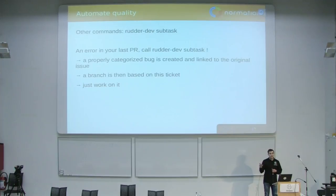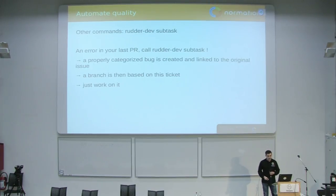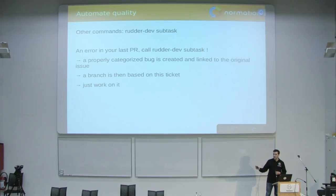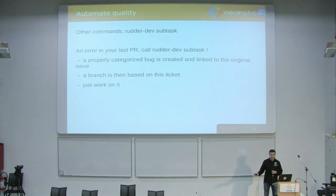Another command is subtask. If you create a pull request and it gets merged, and you then find there was a bug within what you've done, just run subtask and it automatically opens a new ticket based on the original one. They are linked, and you are ready to code and fix your bug. You don't have to find back where it was, which issue it was — just work on it.